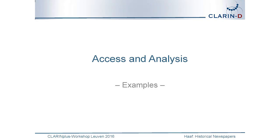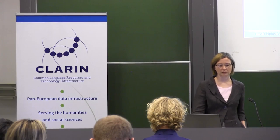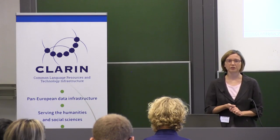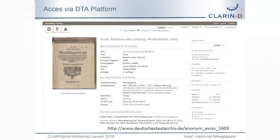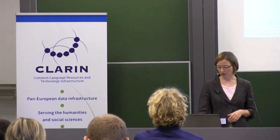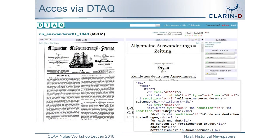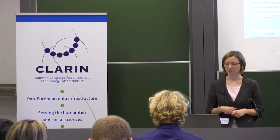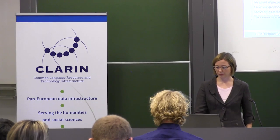Some prospects about access and analysis of the newspaper corpora within the DTA: like all our texts, you can access them one by one. They each have their own page with metadata, and you can get into the text, read it, or see the TEI XML. You can also download the text in different formats. Some are still in the quality assurance platform, but you can access them by signing up for DTAQ, where you can download and also correct them.